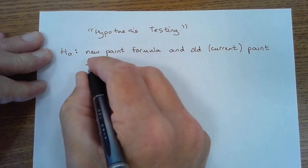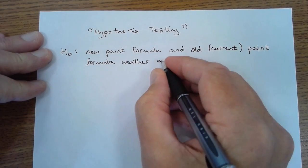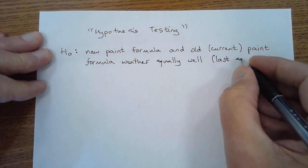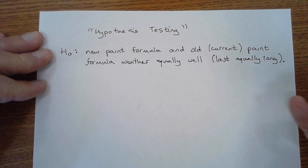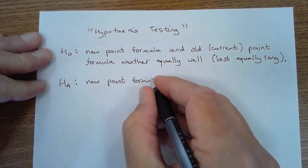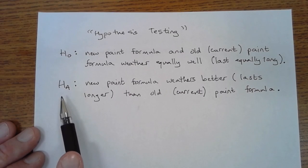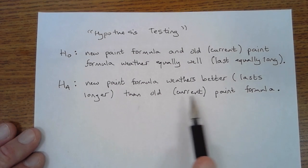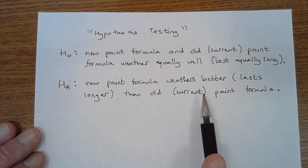In the hypothesis testing framework, the null hypothesis is that really nothing interesting is going on, so the new paint formula and the current paint formula work just as well as each other. Nothing's there really. The alternative hypothesis, which is what we usually are hoping to show is true, in this case would be that the new paint formula really does weather better than the existing paint formula, that is it lasts longer.